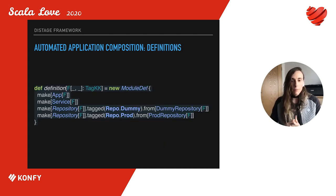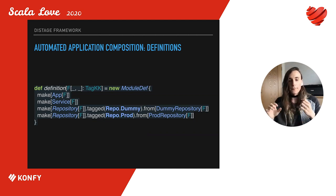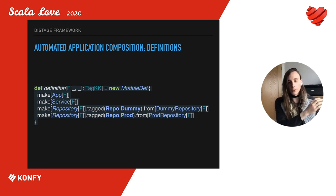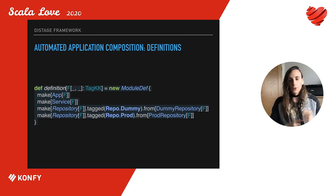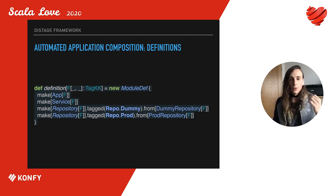We may declare our application components in a Guice-like style. We declare that there will be an App path and a Service App, and also two possible implementations of Repository App — the dummy repository and the production repository. We require one of them to be tagged repo-dummy and the other repo-prod.